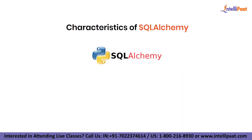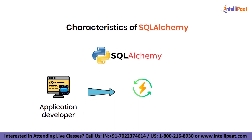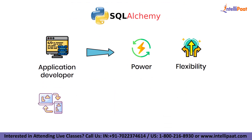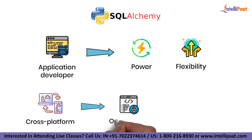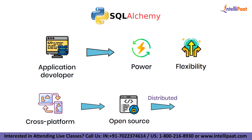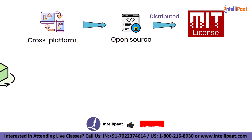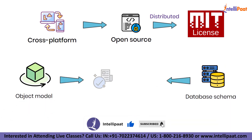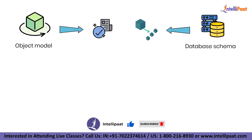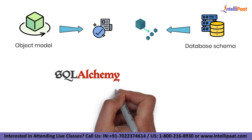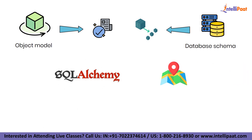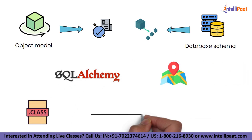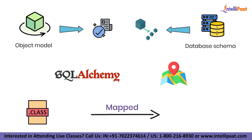SQL Alchemy is written in Python. It provides an application developer with all SQL's power and flexibility. It is a cross-platform software that is open-source and distributed under the MIT license. The object model and database schema may be developed in a clear decoupled manner thanks to SQL Alchemy's object relational mapper ORM, which allows classes to be mapped to the database.